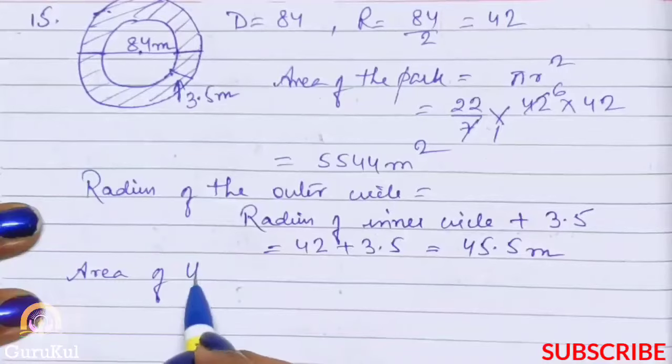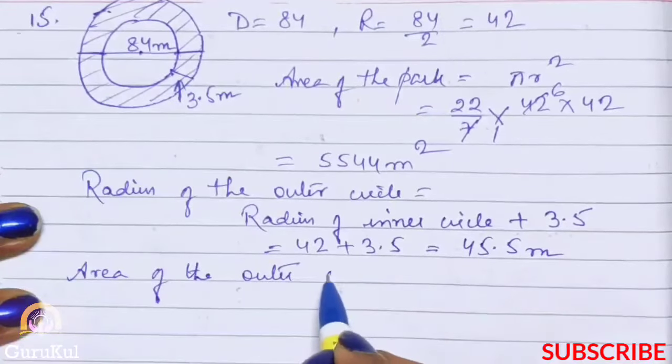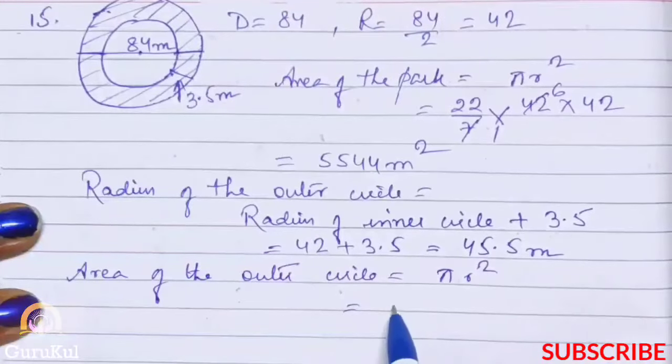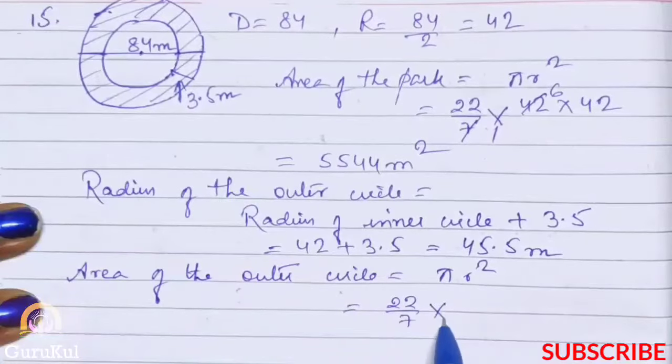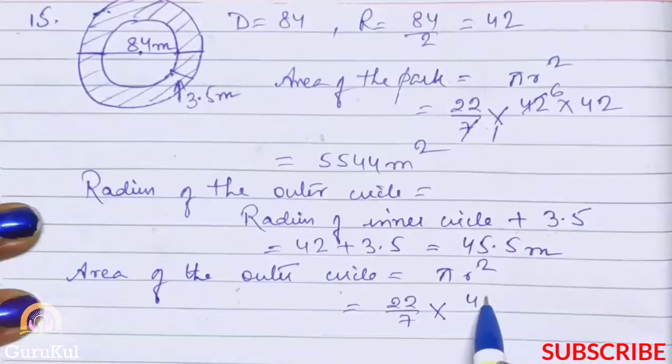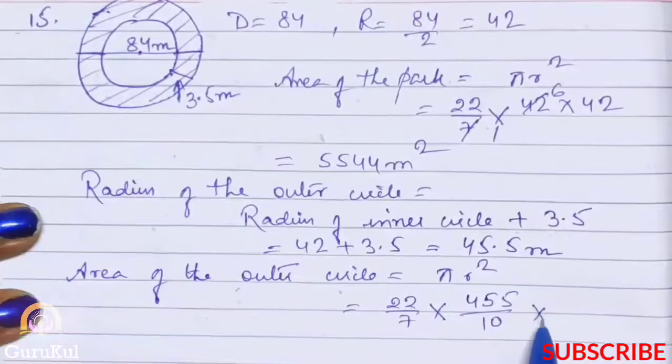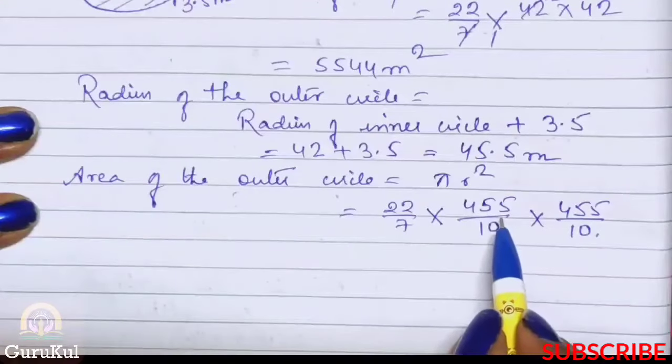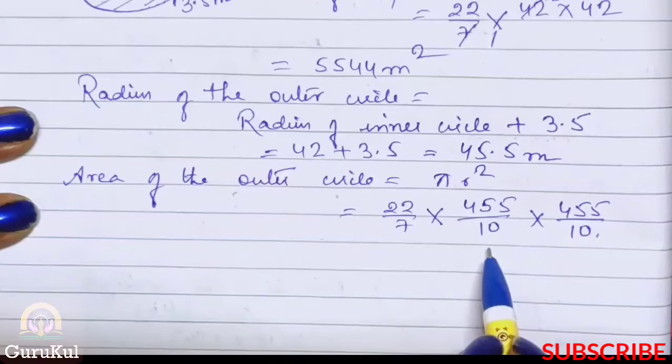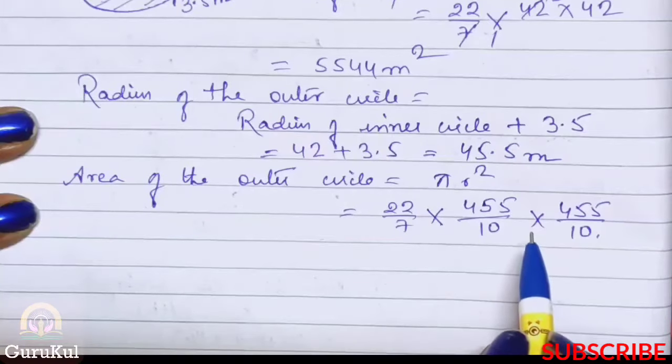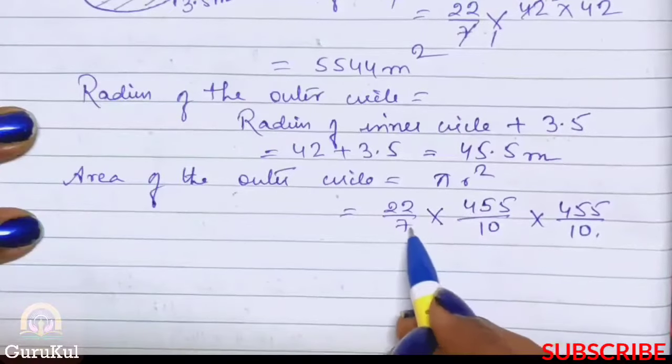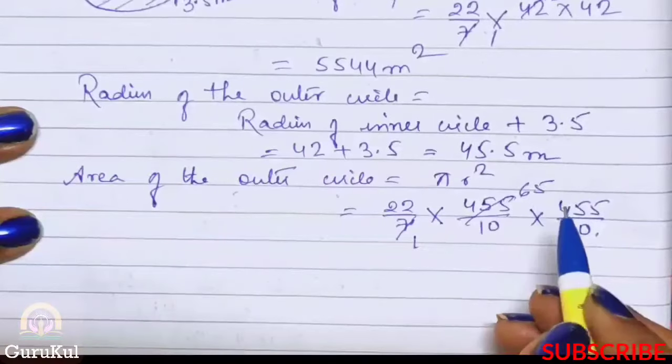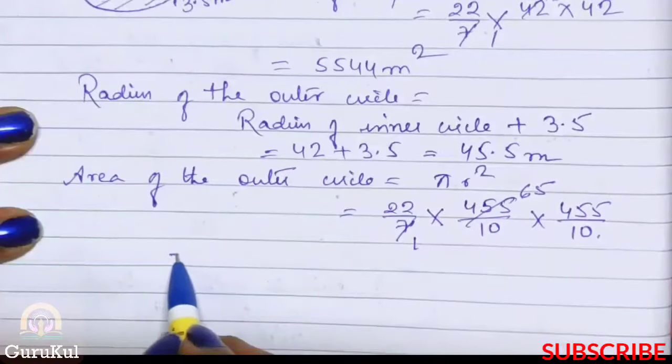So area of the outer circle is equal to πr², which is 22 by 7 into 455 by 10 into 455 by 10. Reason is because we have shifted the decimal to one place, that's why denominator is 10. Now let's do the further calculation. So 7 ones are, 7 sixty-fives are. Now let's multiply.